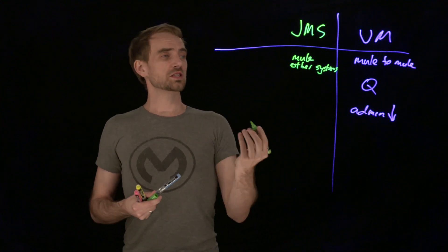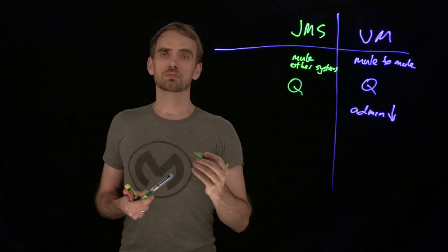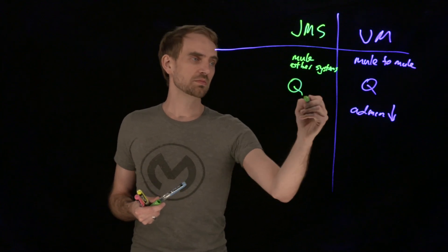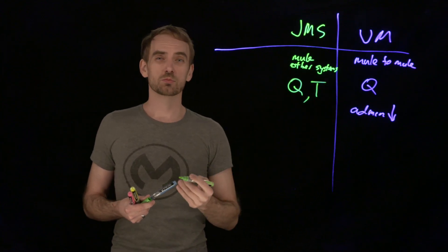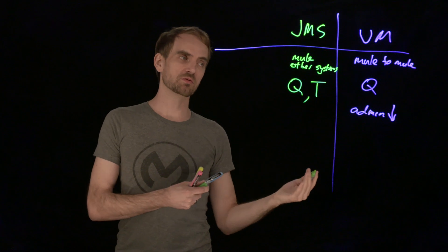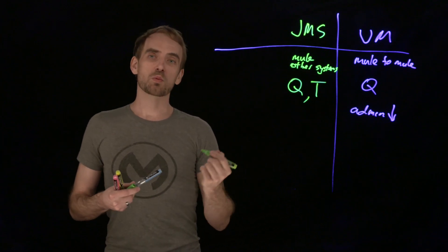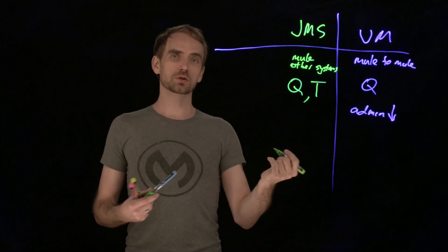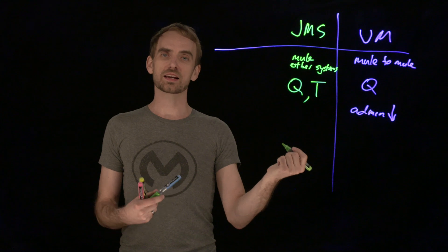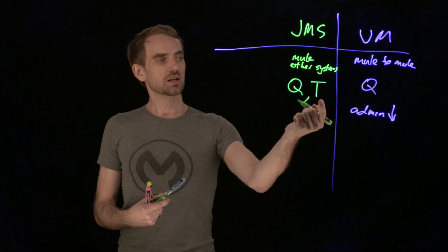The concepts, well, we've got queues, which are one named destination, and then we have topics, which is a one-to-many. This is the pub-sub style of invocation. So, if you want one message going to multiple consumers and each of those consumers getting a copy of that message, you would use topics.